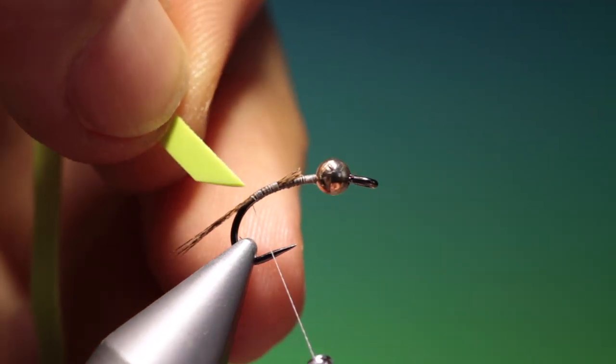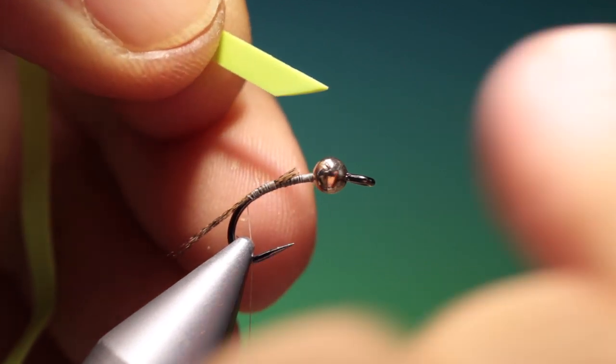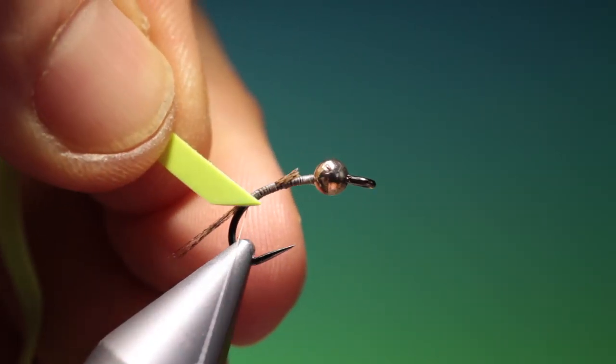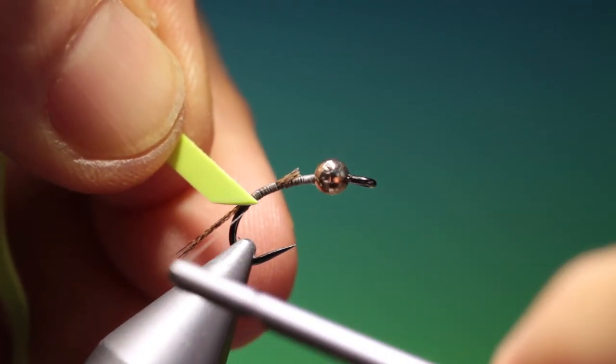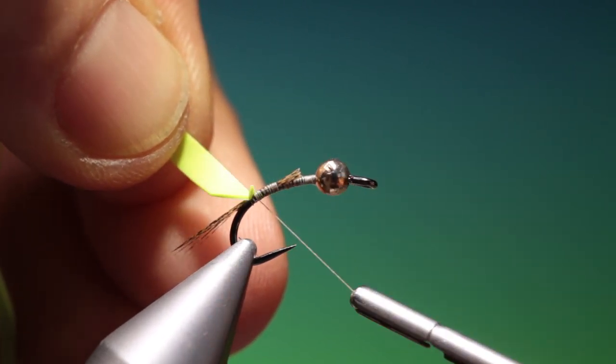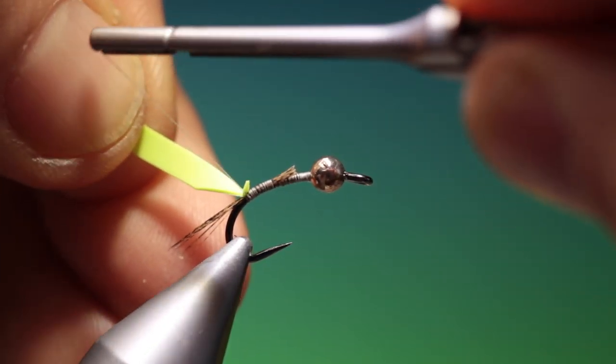And this is a short length of nymph skin. You cut the end at an angle. So we can tie this in just at the tail base.